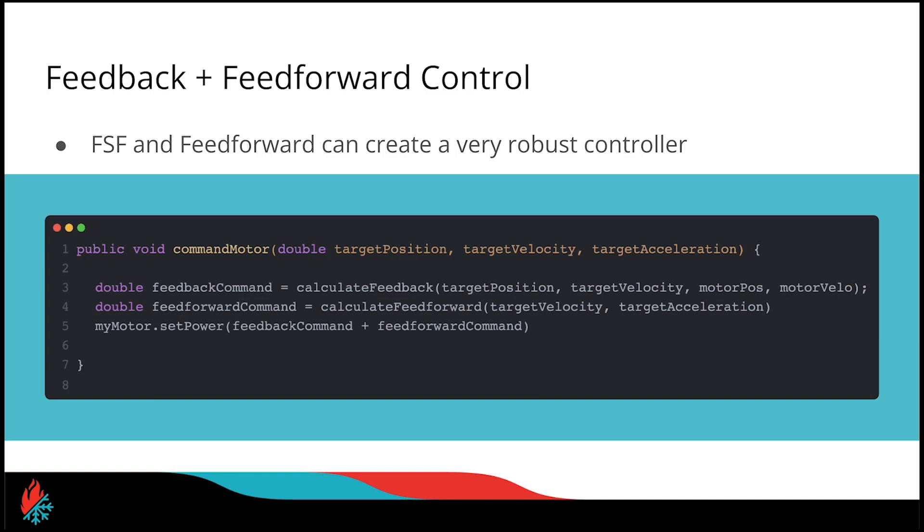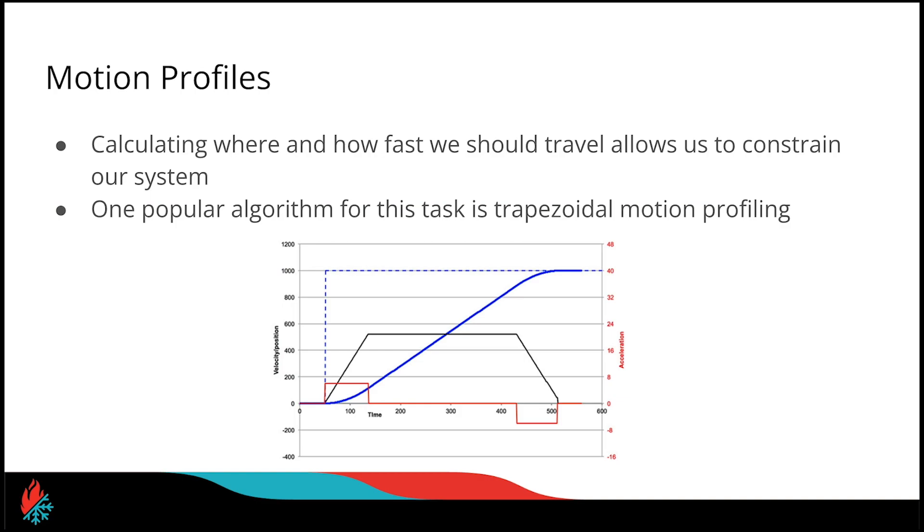One thing we can do is combine full state feedback and feedforward to create an incredibly robust controller. Here we are using the full state feedback to do full state feedback on our target velocity and target position. We're also using feedforward on our target velocity and target acceleration, and then we're summing these two commands together and sending them to our motor. The important part to figure out is where do we get our target position, velocity, and acceleration from. Usually we have some idea of the end goal, but it's difficult to figure out exactly how fast or how much we want to accelerate. That's where motion profiling comes in.